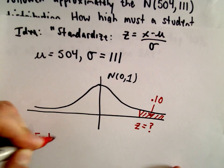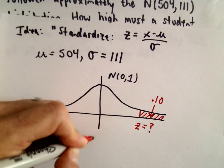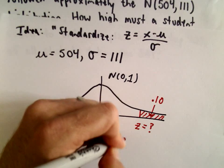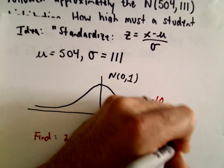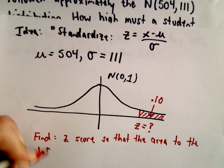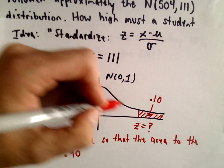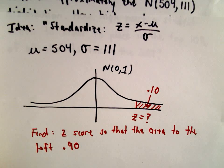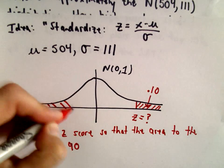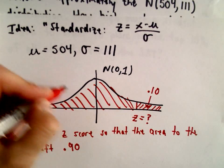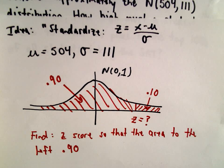So what we're going to have to find is the z-score so that the area is 0.90, right, because the area underneath the curve adds up to one in total. So I need to find that z-score so that the area to the left is 0.90. I'm going to look that up in my table.